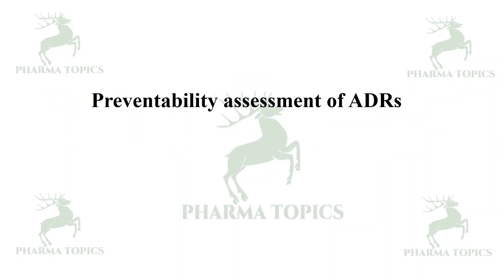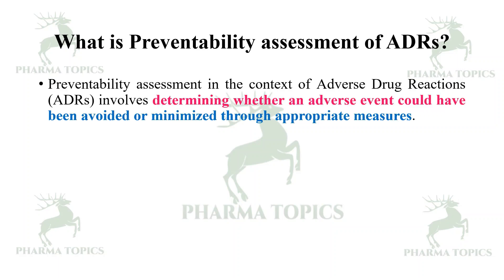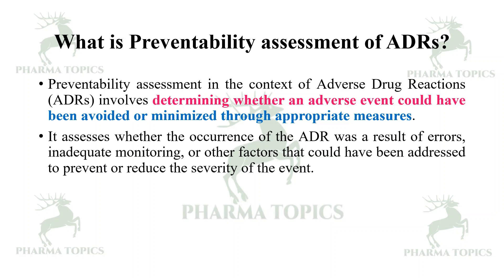Next is preventability assessment of ADRs. What is preventability assessment? Preventability assessment in the context of ADRs involves determining whether an adverse event could have been avoided or minimized through appropriate measures. It assesses whether the occurrence of an ADR was a result of errors, inadequate monitoring, or other factors that could have been addressed to prevent or reduce the severity of the event.